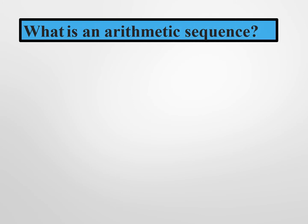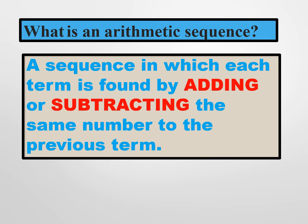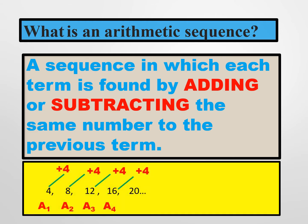Let's have a recall first about the arithmetic sequence. An arithmetic sequence is a sequence in which each term is found by adding or subtracting the same number to the previous term. For example, we have 4, 8, 12, 16, and 20. This is an arithmetic sequence because we add 4 to the first term to get the second term, add 4 again to get 12, and add another 4 to get 16, and so on.